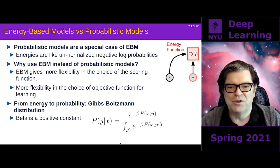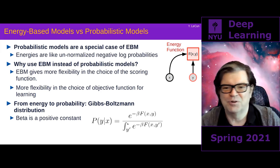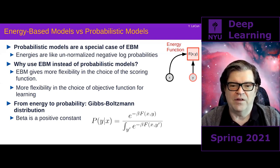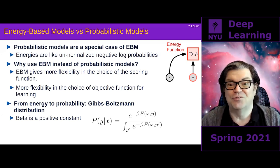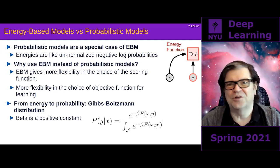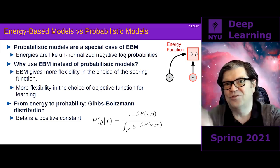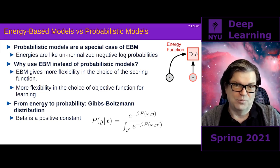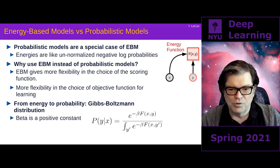You define p of y given x as exponential of minus beta times the energy f of x, y, where beta is a constant — for physicists it's an inverse temperature. That makes all those numbers positive, and gives large values for low energy and low values for high energy, which is what you want when turning energies into probabilities. Then you normalize by dividing by the integral over y of e to the minus beta f of x, y-prime, so the distribution integrates to one.